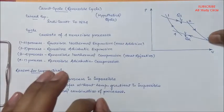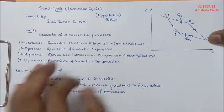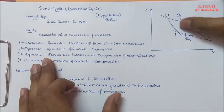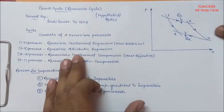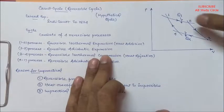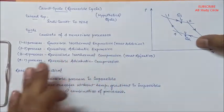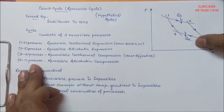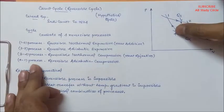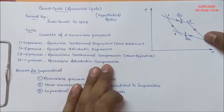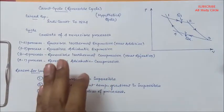From three to four, it follows a reversible isothermal compression process where heat rejection takes place. And lastly, it goes from four to one with reversible adiabatic compression process and completes the cycle.